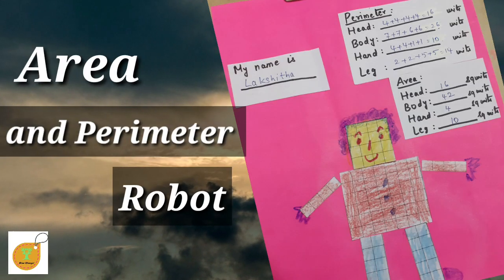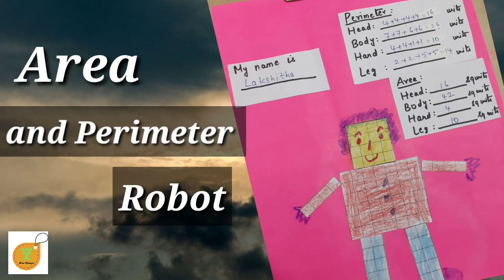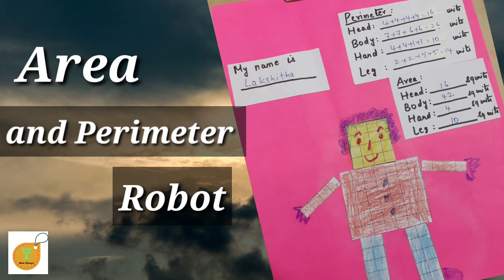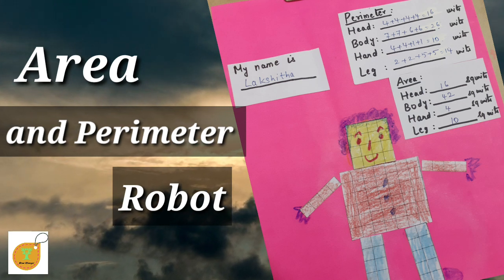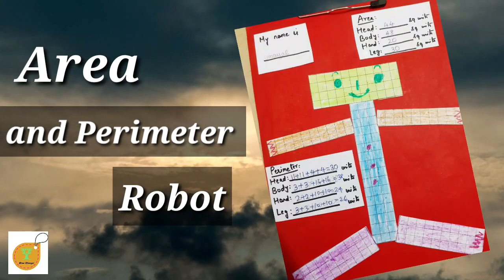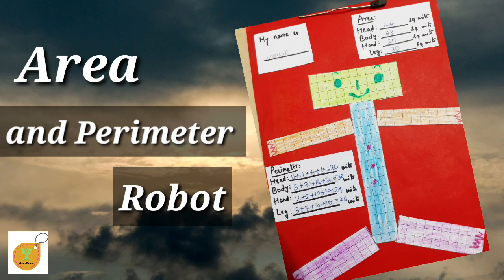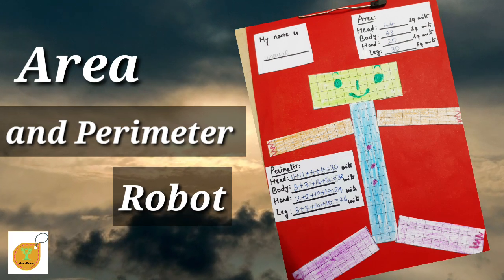Area and Perimeter — it's a little fun and creative. In this picture, it's called Lakshita and Ullagammai. It's called Area and Perimeter.